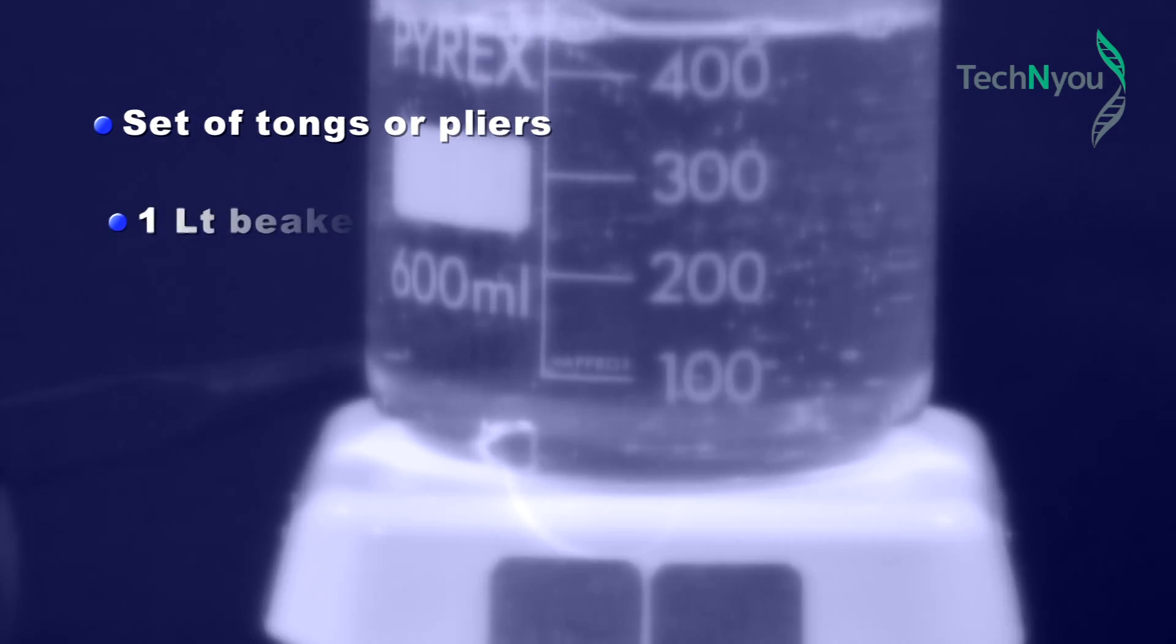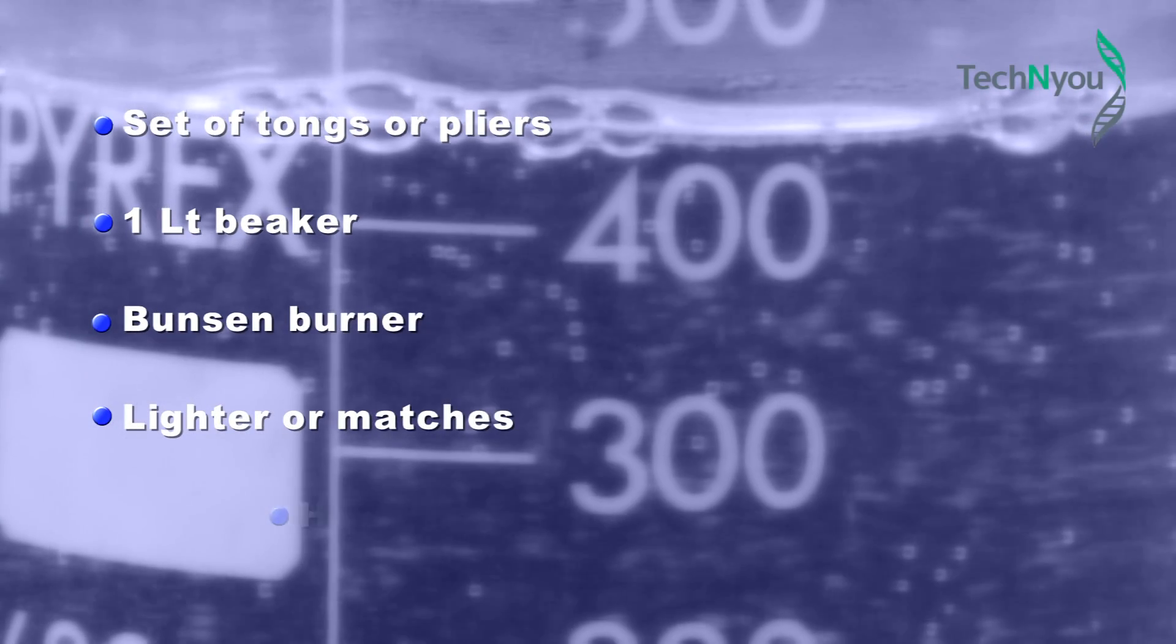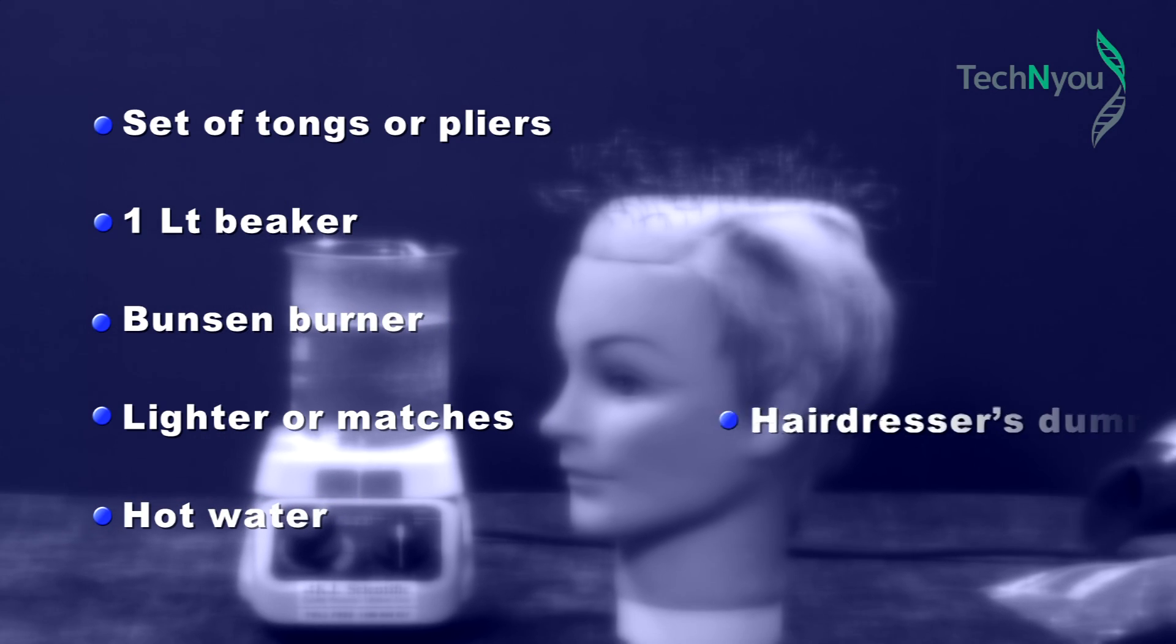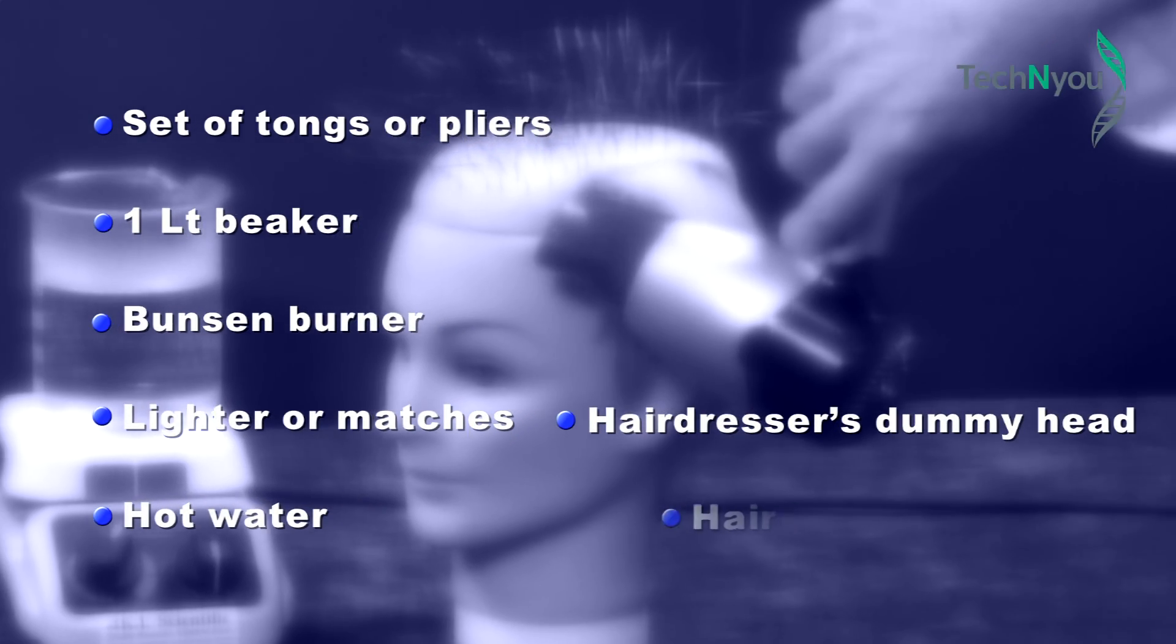A one litre beaker, a Bunsen burner, lighter or matches, hot water, a hairdresser's dummy head wired with Nitinol as shown, and a hairdryer.